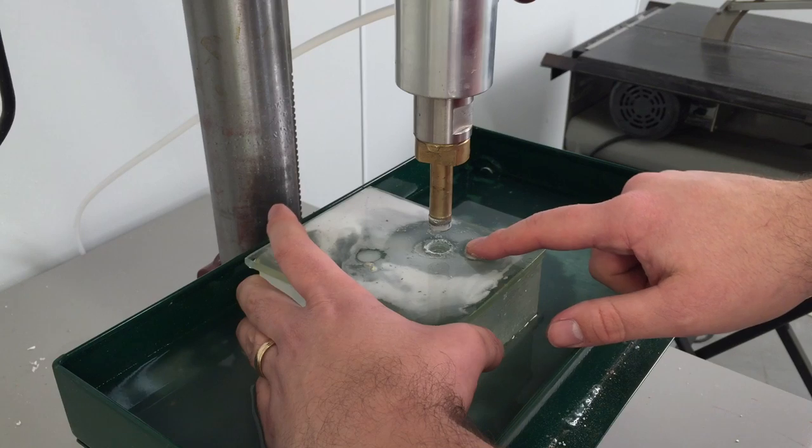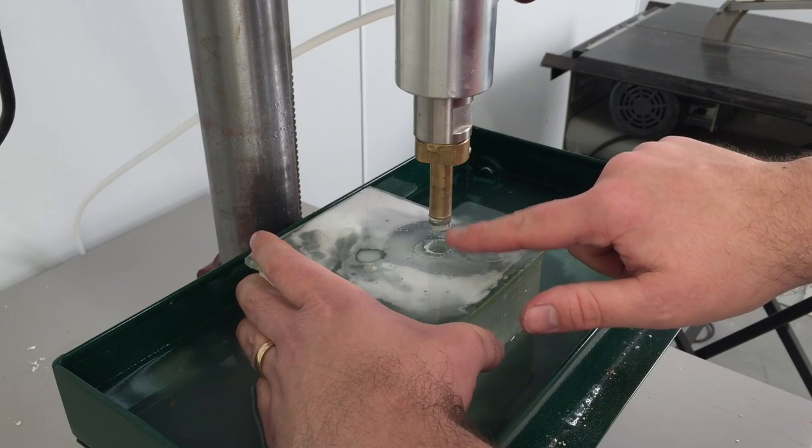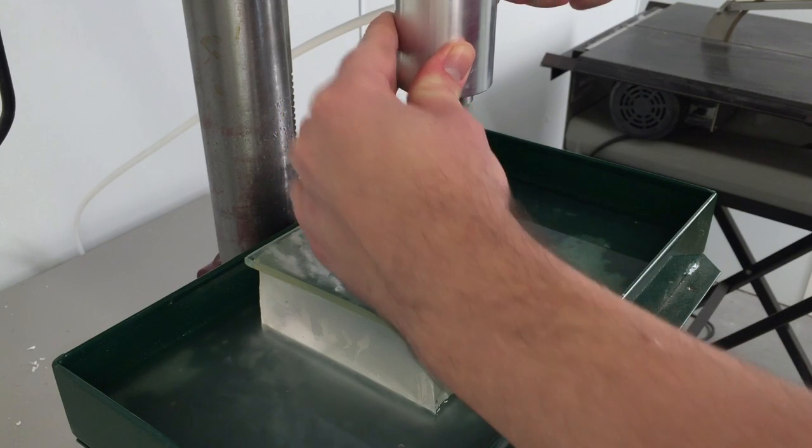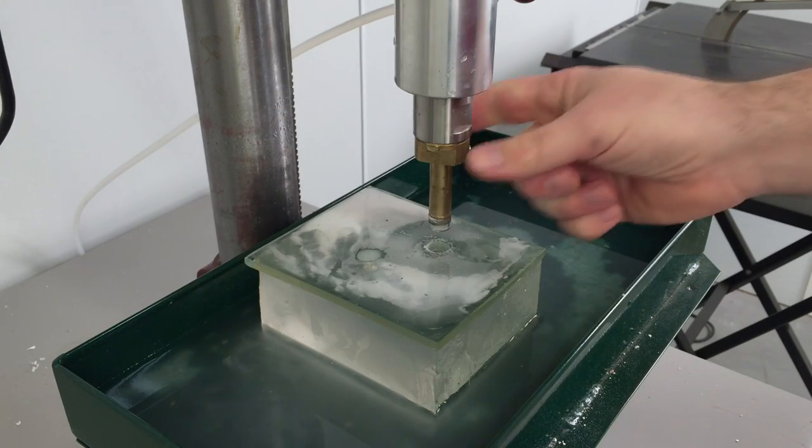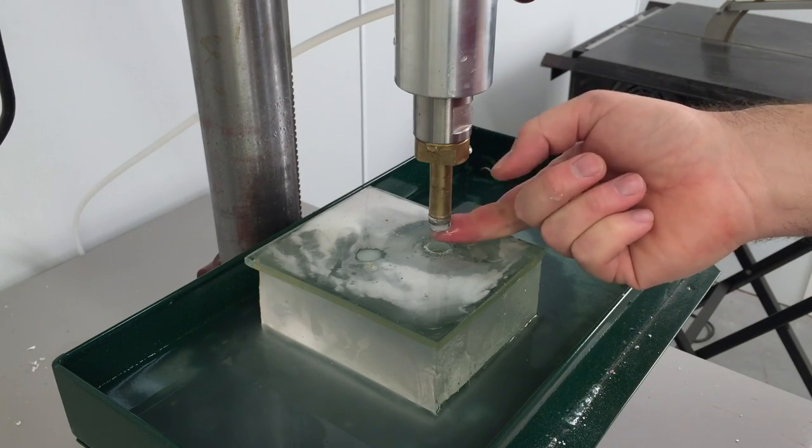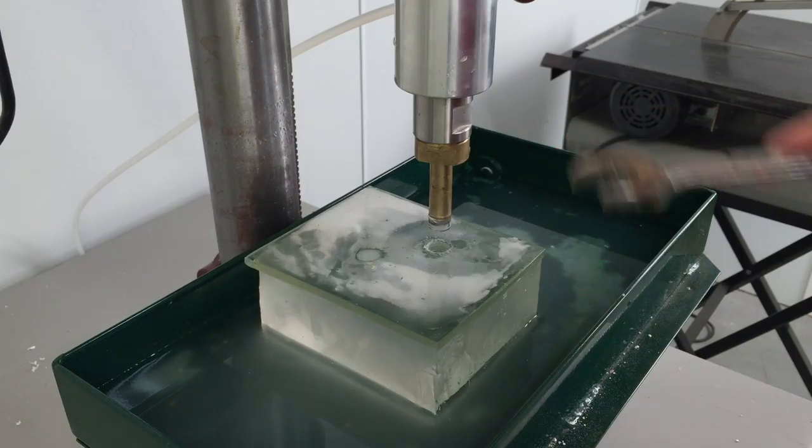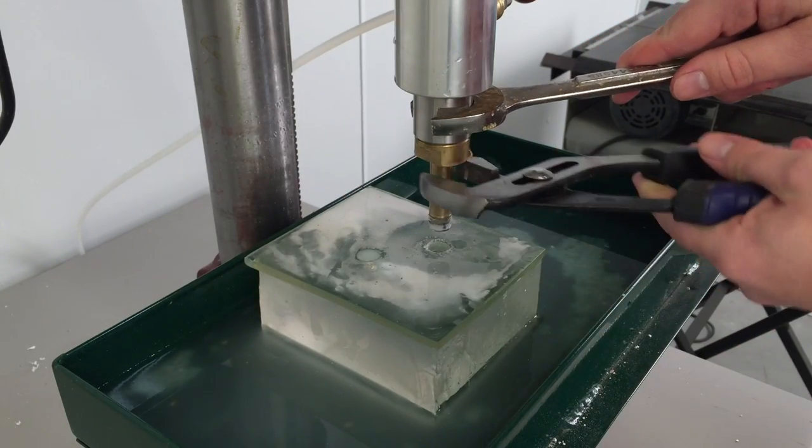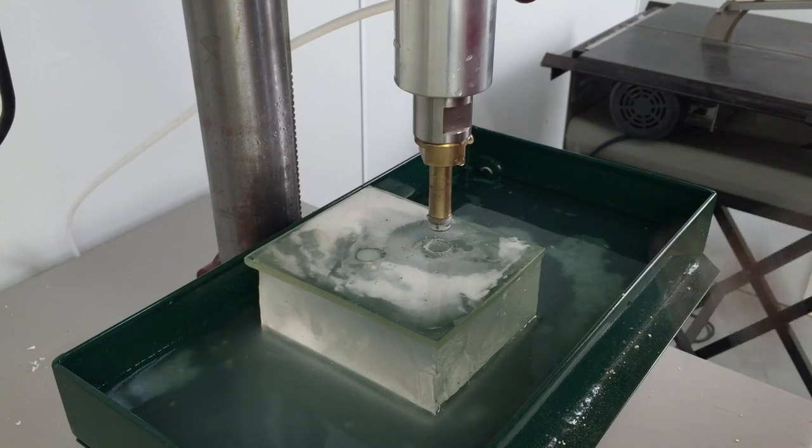If I continued drilling in this, it would have stripped the entire tip of my core drill off and probably cracked my glass too. So I'm going to turn off my water feed to my core drill. I'm going to take my core drill out and I'm going to have to remove this piece.